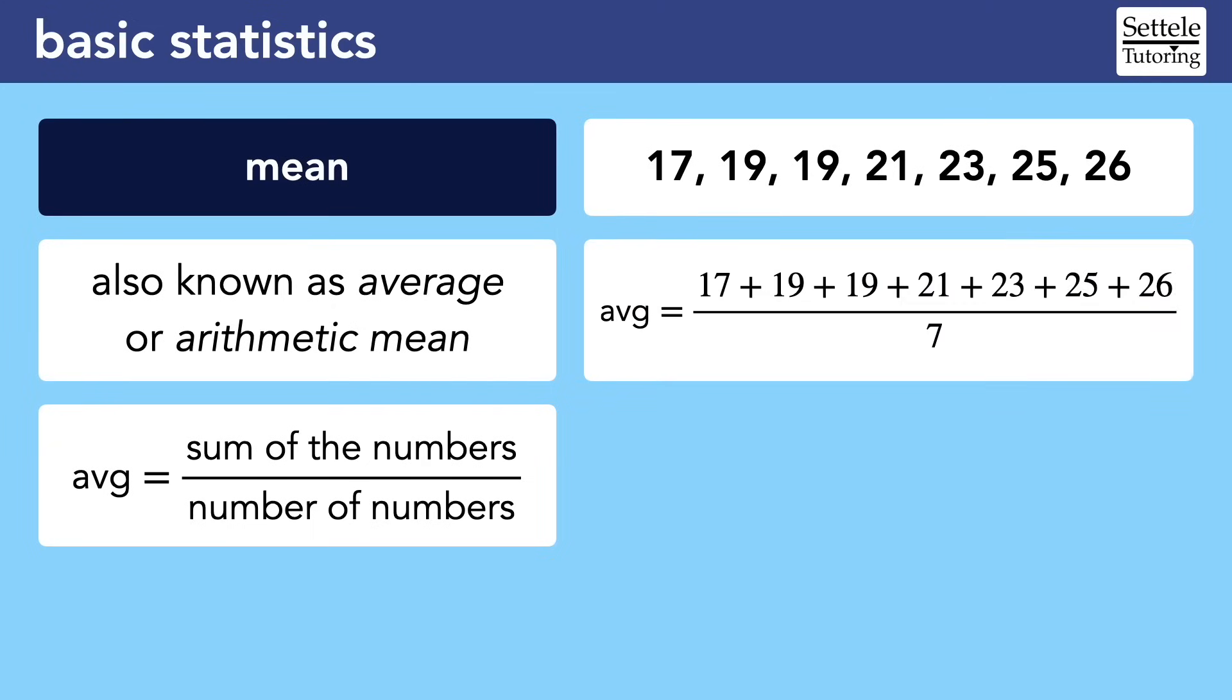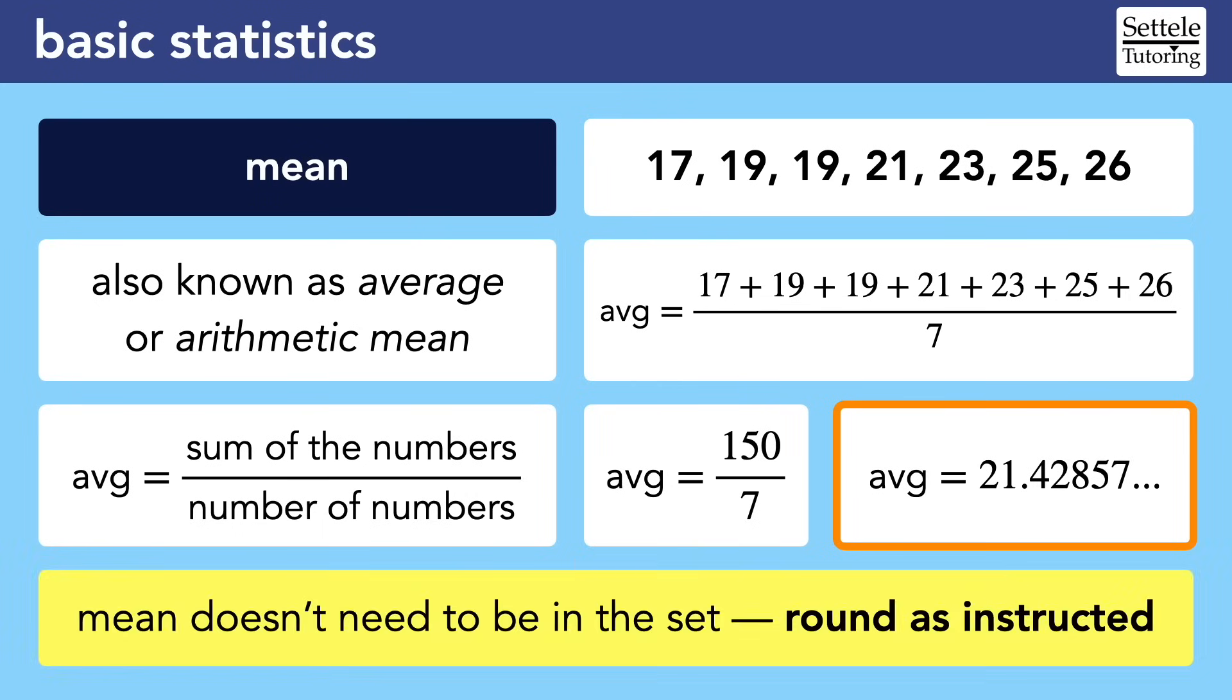For this example, we add 17, 19, 19, 21, 23, 25, and 26 to get a total of 150. Then we divide by seven because this dataset consists of seven numbers. We get an average of 21.42857 and so on. This may seem like a wrong answer because it's a messy number, but it's fine. The mean does not need to be a number that's actually in the dataset. Since the formula involves division, decimals are common.